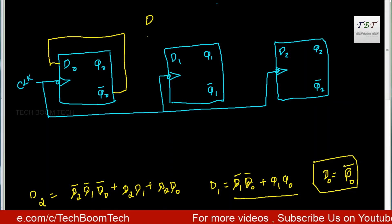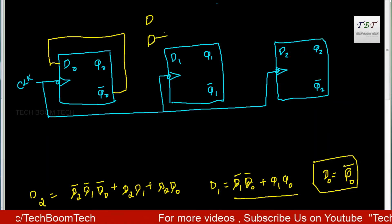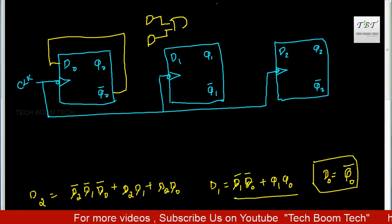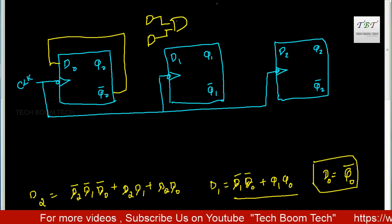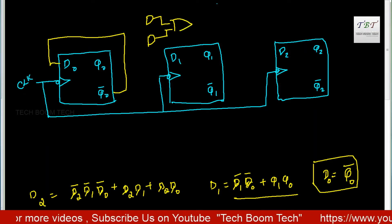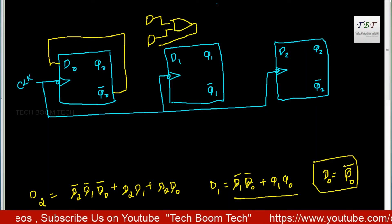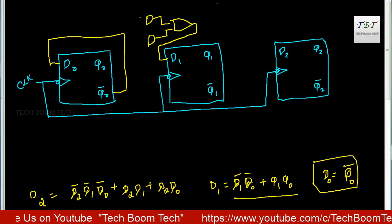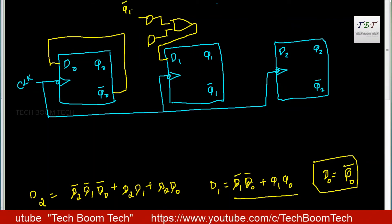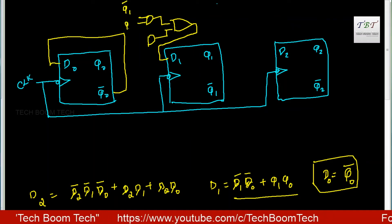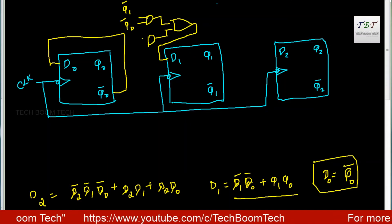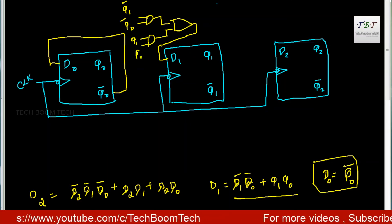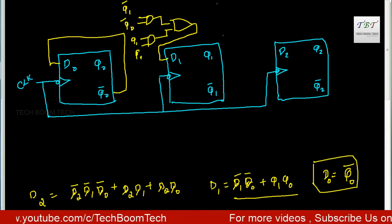The AND gate inputs are Q1 bar and Q0 bar, and another AND gate takes Q1 and Q0. The OR gate output connects to D1. So here I am adding Q1 bar plus Q0 bar, and to the OR gate, Q1 and Q0. The diagram gets a little complicated.